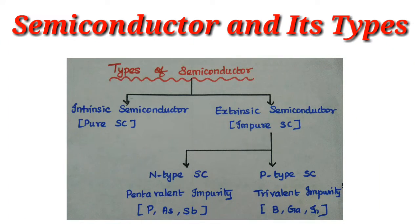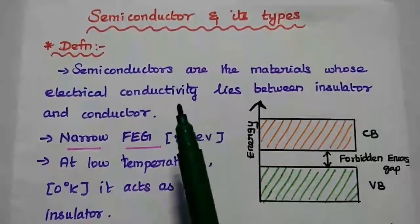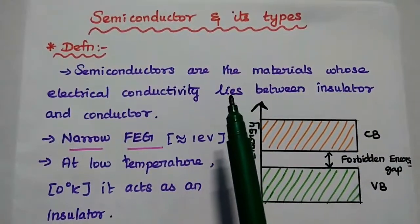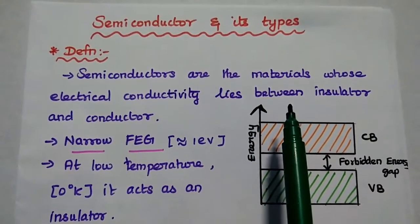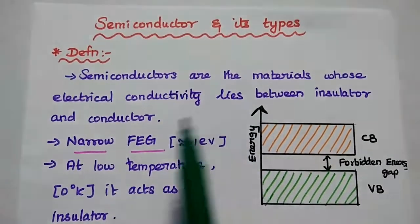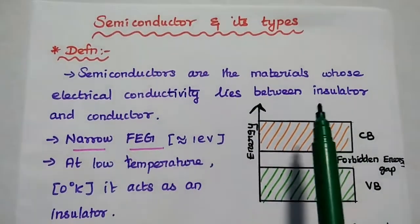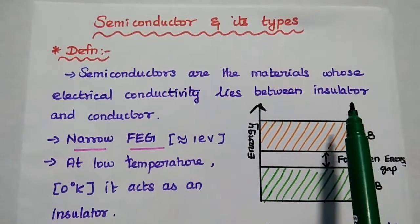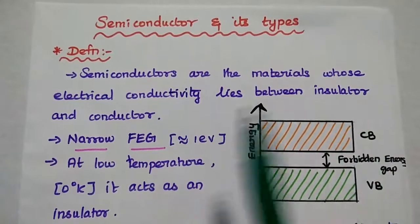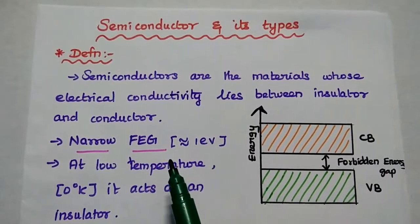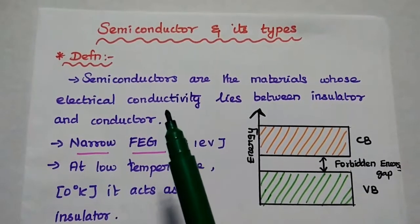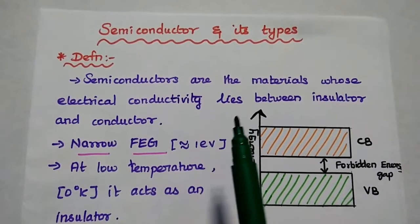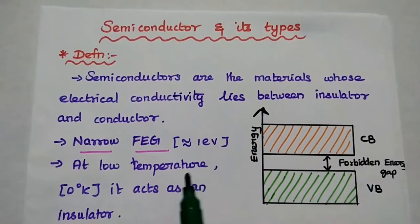We are going to discuss semiconductors and their types in detail with their operation. Let's start with the definition of semiconductor. Semiconductors are materials whose electrical conductivity lies between insulator and conductor. An insulator is a material which cannot conduct, and a conductor is a material which has very high conductivity. The electrical properties of the semiconductor lie between insulator and conductor.